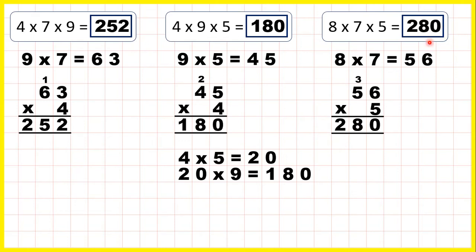But again, it would have been quicker to spot that 8 times 5 is 40, and 40 ends in a 0. So then it's really easy to multiply that 40 by the other number in our question, so by 7.